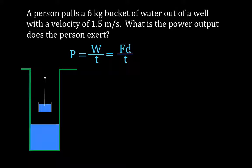Now, once again, we're not given the distance. We're not told how far they're going to pull the bucket out of the water, or how deep the well is. We're not given the time, but we are given the force, because we know it's a 6 kilogram bucket. If we multiply 6 kilograms, the mass of the bucket, times the acceleration due to gravity, that will give us the weight of the bucket, and therefore we know the person has to apply an equal and opposite force to lift the bucket out of the well at a constant velocity.